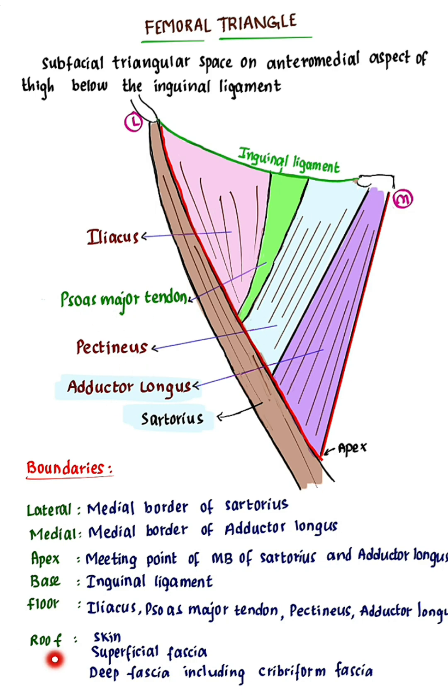Roof. From superficial to deep, it is formed by skin, superficial fascia, and deep fascia including the cribriform fascia.